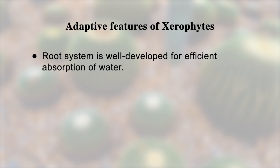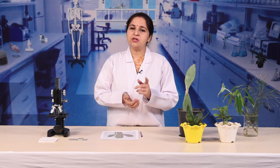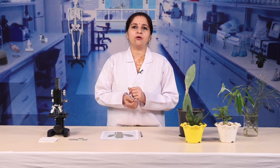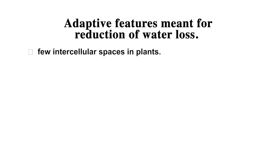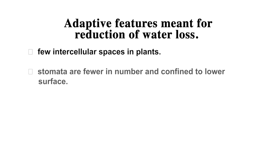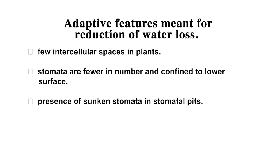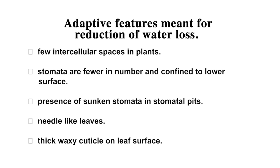Leaf blade remains rolled during daytime in many xeric plants to prevent water loss by transpiration. Root system is well developed for efficient absorption of water. While observing slides or diagrams of transverse section of leaf, you will see the following adaptive features meant for reduction of water loss: few intercellular spaces, stomata fewer in number and confined to the lower surface, presence of sunken stomata in stomatal pits, needle-like leaves, and a thick waxy cuticle on the leaf surface.